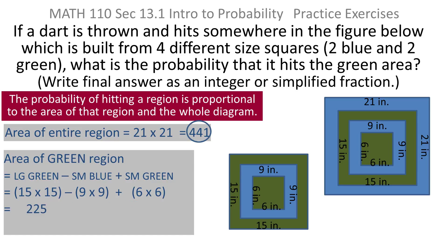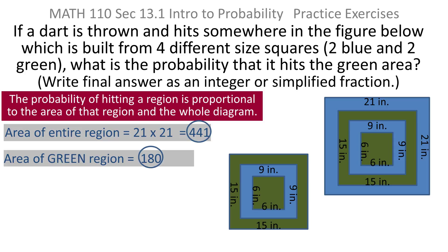Now I know that 15 times 15 is 225, your calculator will tell you. 9 times 9 is 81, but it's subtracted, and 6 times 6 is 36, and 225 minus 81 plus 36 is 180. So what I've found now is that the area of the green region is 180. The area of the entire region is 441.